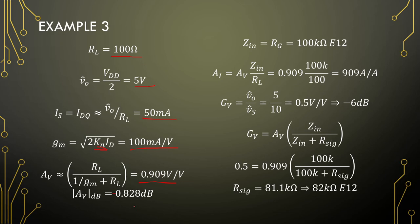The loaded gain is R_load / (1/GM + R_load) = 0.909 V/V. GV is V_out / V_sig, so to handle a 10 V input and get 5 V out — a gain of 0.5 V/V — we choose a signal resistor of about 82 kΩ. So the design is: R_sig = 82 kΩ, RG = 100 kΩ, current source = 50 mA.